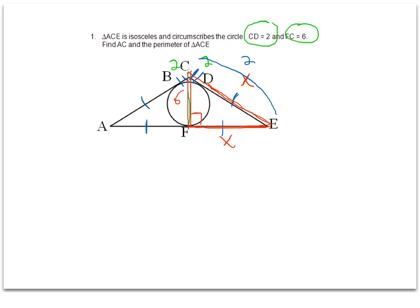The hypotenuse then is going to be the sum of those two pieces. Now I have the short side, the long side, and the hypotenuse of a right triangle, and I can use the Pythagorean theorem to set up my equation.